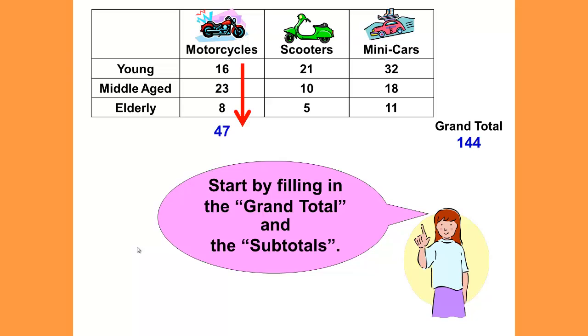So the subtotals will add up the number of motorcycles—that would be 16 plus 23 plus 8, which is 47. The number of scooters, 21 plus 10 plus 5, which is 36. The number of mini-cars, which is 32 plus 18 plus 11, to give me 61 mini-cars. And then if I add 47 plus 36 plus 61, that would give me my grand total of 144.